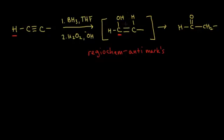So we end up adding H2O across our triple bond. Now there's a double bond present and an OH in our molecule. Just like in the last video, we form an enol. The enol is not the most stable form — we're going to get some rearrangement, and we're going to end up with an aldehyde. So we get an aldehyde functional group from a terminal alkyne undergoing this reaction.